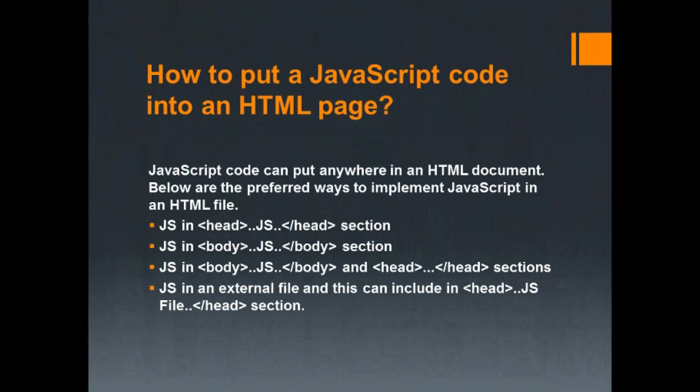Now let's see the ways we can place JavaScript code in HTML pages. The first way is JS in the head section, second is JS in the body section, third is a combination of both head and body sections, and fourth is loading an external JS file into the HTML.